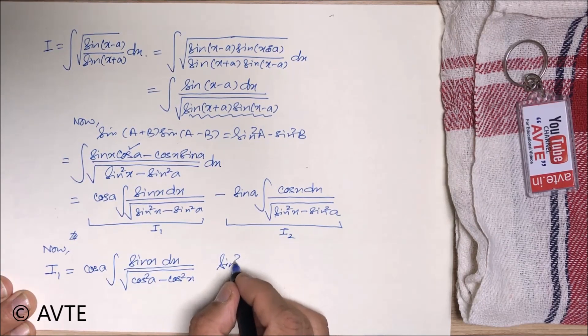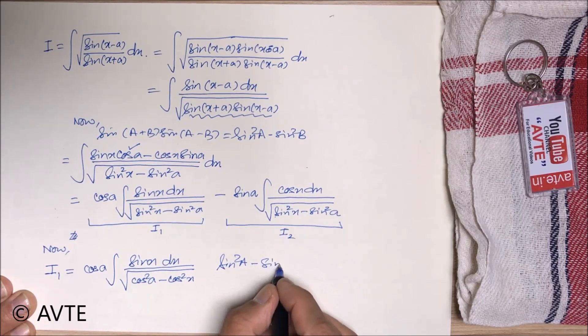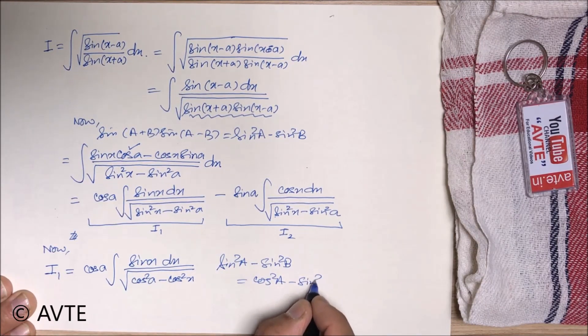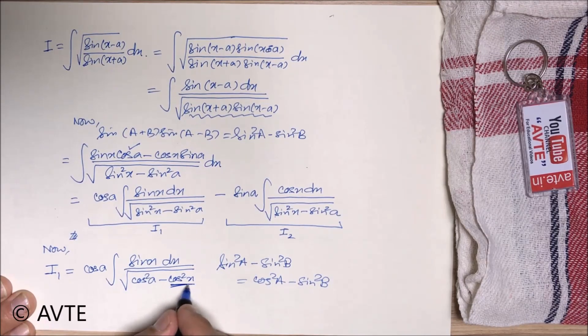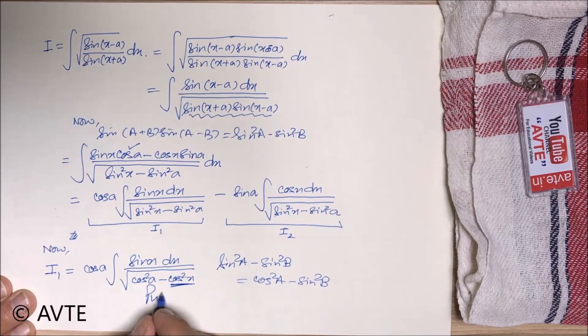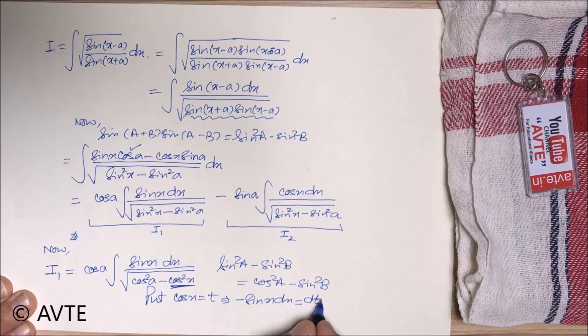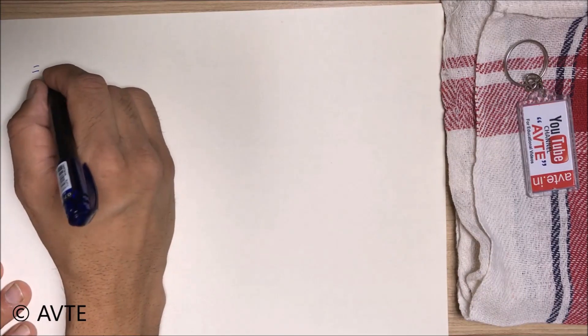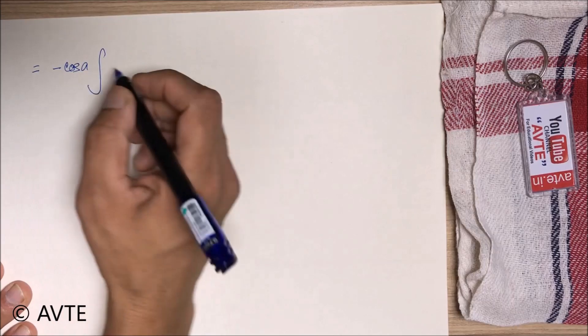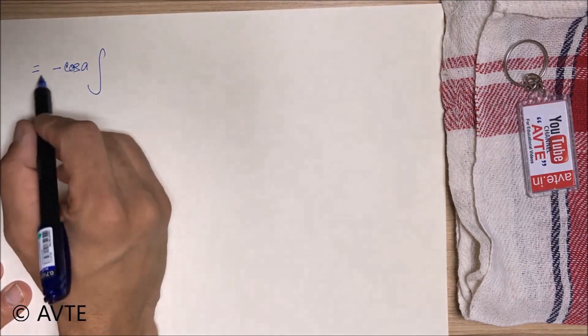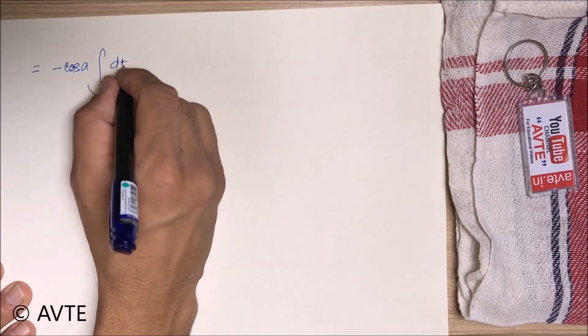From junior classes you know that sin square a minus sin square b is nothing but cos square b minus cos square a. Now can you see that it is so simple because you can put cos x is equal to t. Now put cos x is equal to t. So this thing will come as minus cos a and you remember sin x dx will convert to minus dt. So we have put minus here cos a dt over.